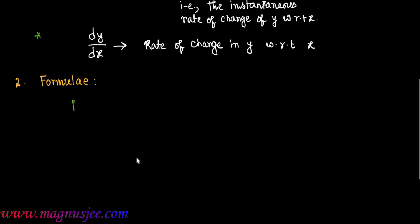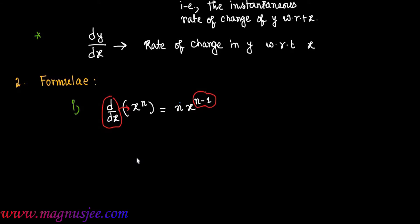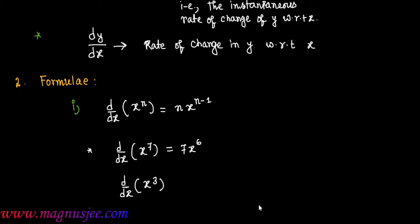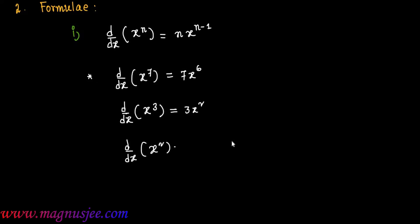Formula number 1: d/dx of x to the power n equals n·x to the power n minus 1. So when d/dx is operated over x^n, the power decreases to n−1 and the unchanged power n comes in front of x. For example: d/dx of x^7 becomes 7x^6; d/dx of x^3 becomes 3x^2; d/dx of x^2 becomes 2x; and d/dx of x equals 1.